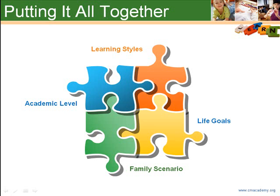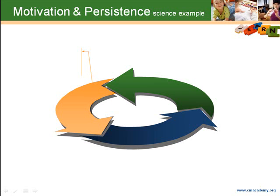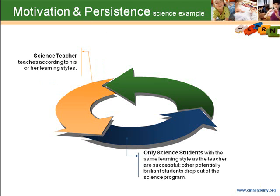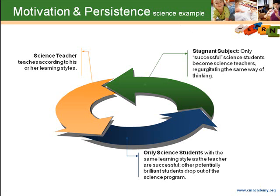Creating a plan with all of these considerations can lead to an increase in student motivation and persistence. Take, for example, a current concern in science education. There is a cycle that begins with the science teacher teaching according to his or her learning styles, which leads to the science students with the same learning style as the teacher being the successful ones. Other potentially brilliant students drop out of the science program. This can lead to a stagnant subject because only the successful science students become science teachers, regurgitating the same way of thinking. As you can imagine, in science, this could be fatal.